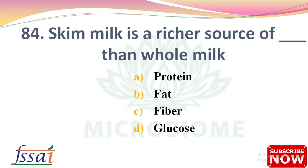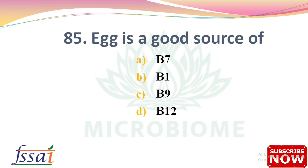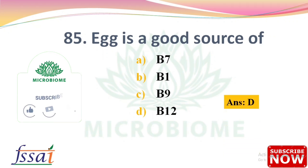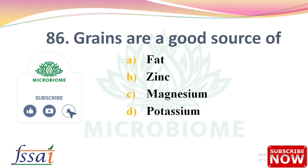Next: Skim milk is a richer source of dash than whole milk — options: protein, fat, fiber, glucose. The right answer is option A, protein. Next: Egg is a good source of — options: B7, B1, B9, B12. The right answer is option D, B12. Next: Grains are a good source of — options: fat, zinc, magnesium, potassium. The right answer is option B, zinc.